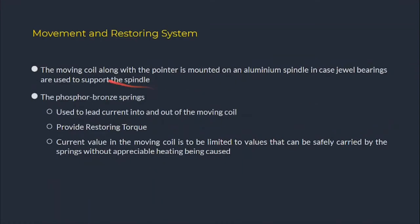The moving coil along with the pointer is mounted on an aluminium spindle. Jewel bearings are used to support the spindle. Phosphor bronze springs are used to lead current into and out of the moving coil and they provide the restoring torque. The current value in the moving coil is limited to values that can be safely carried by the springs.